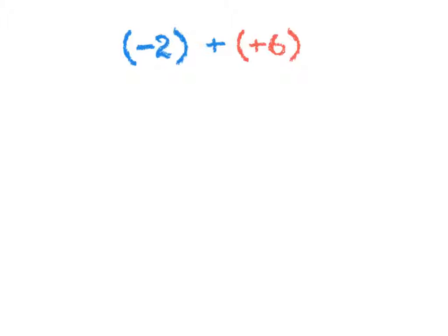We'll take a look with one at the other direction. So I have negative two counters, one, two, plus positive six counters.